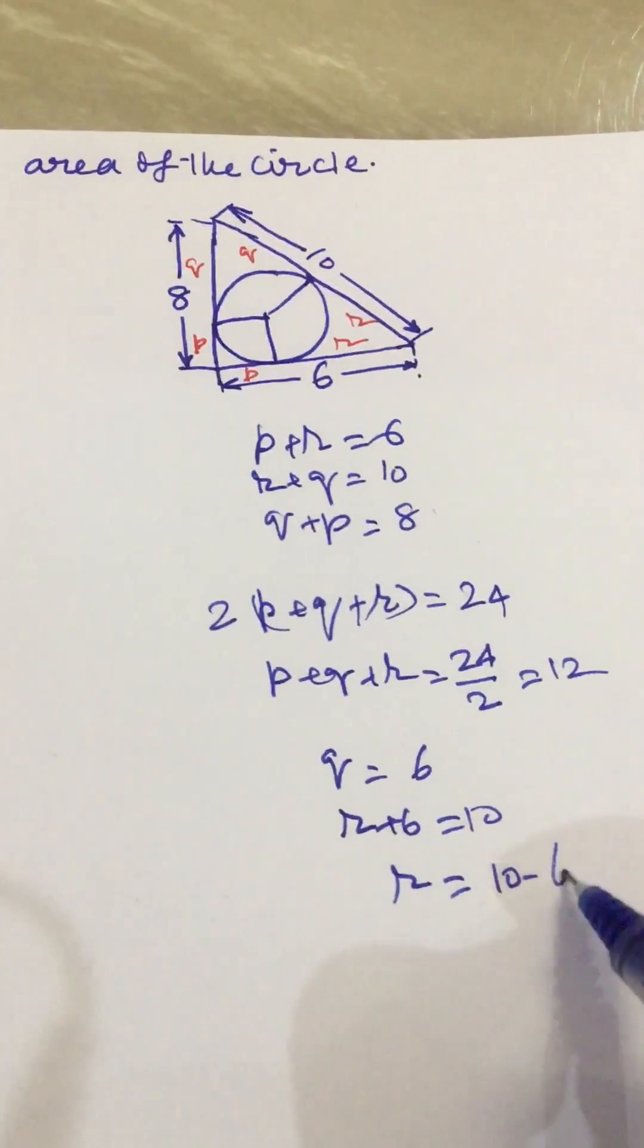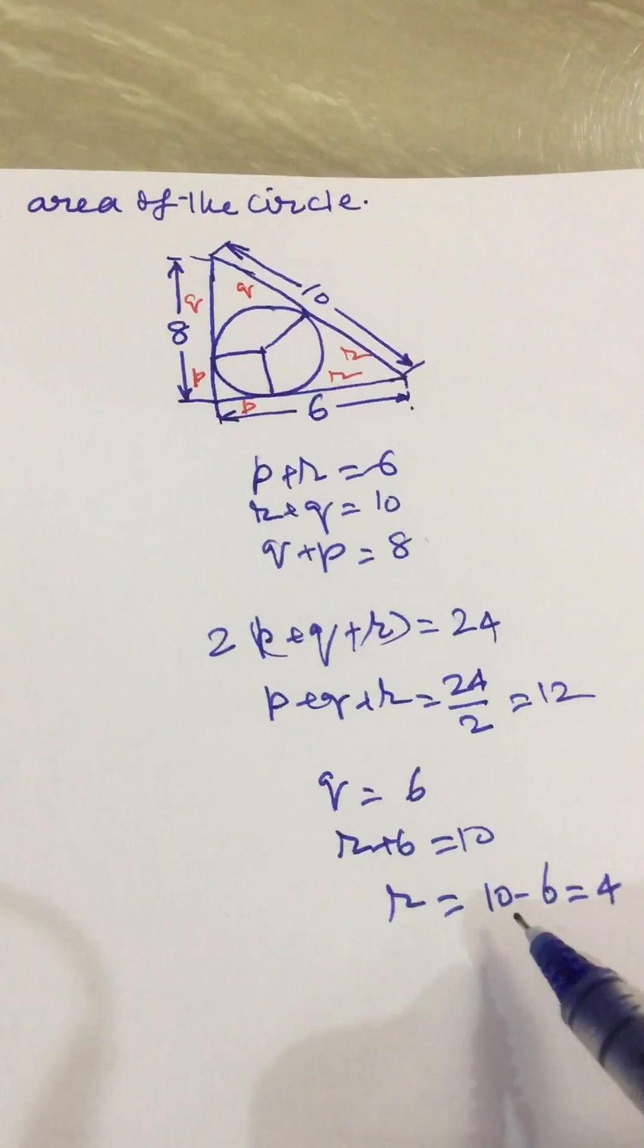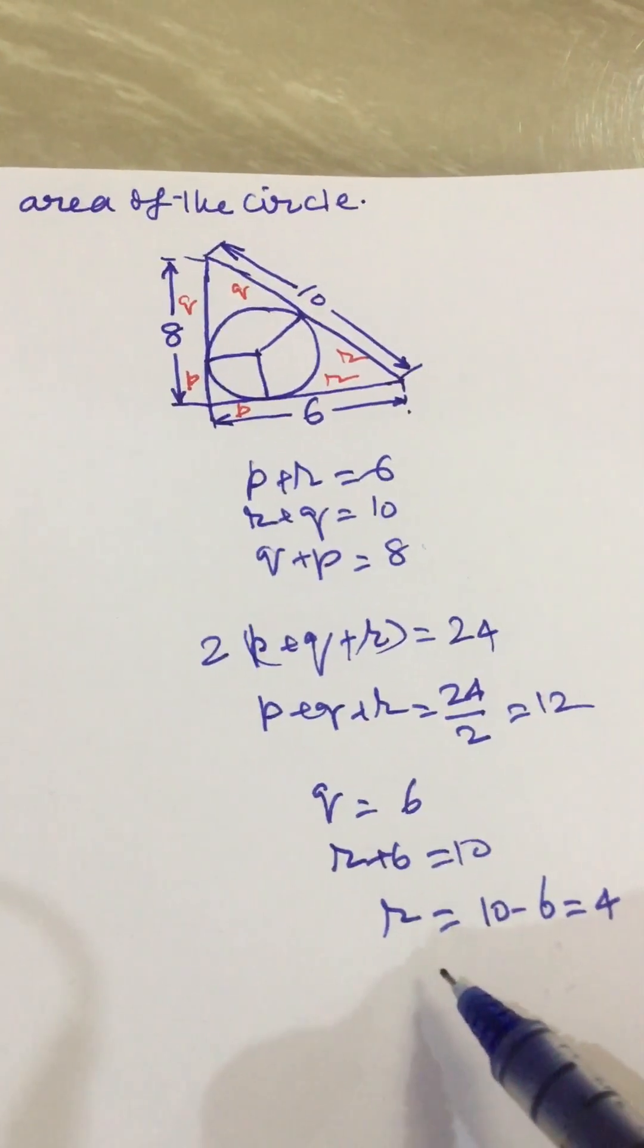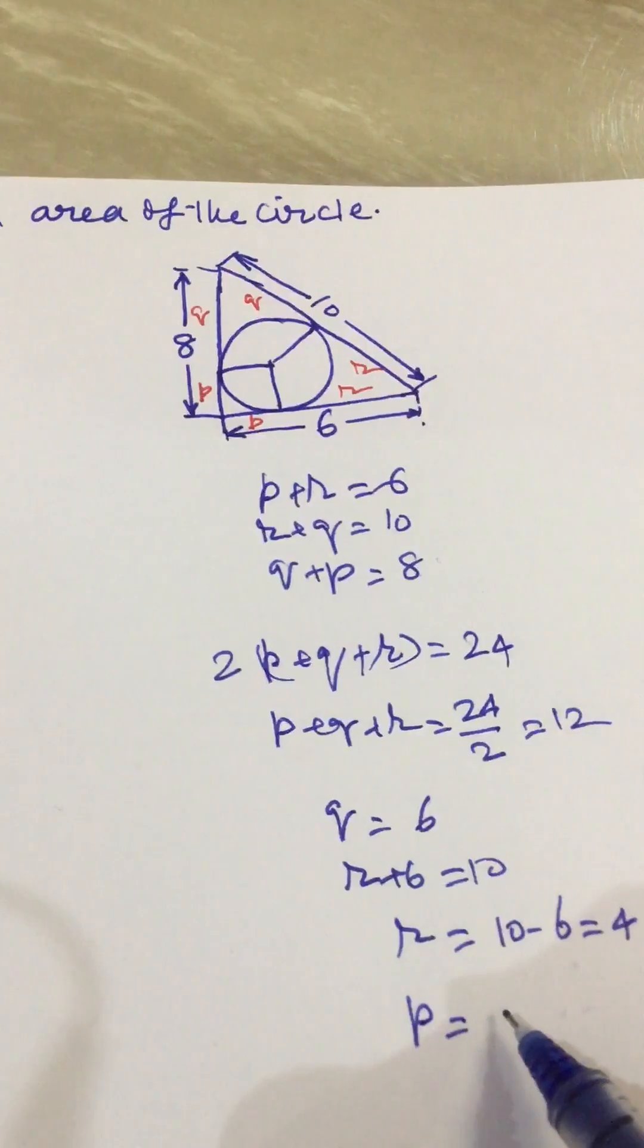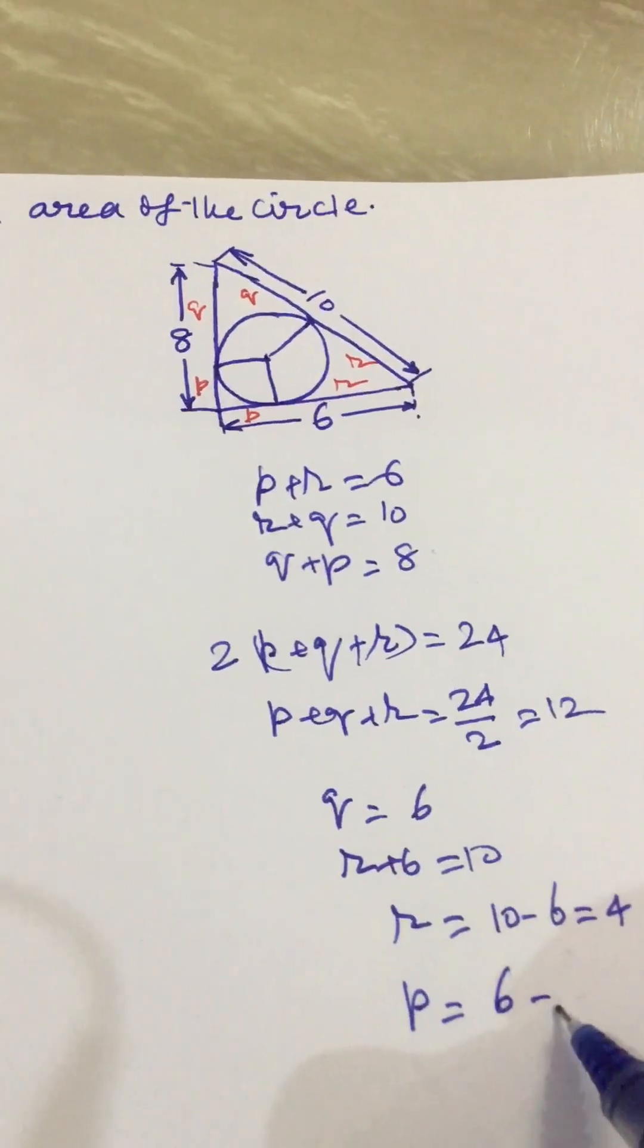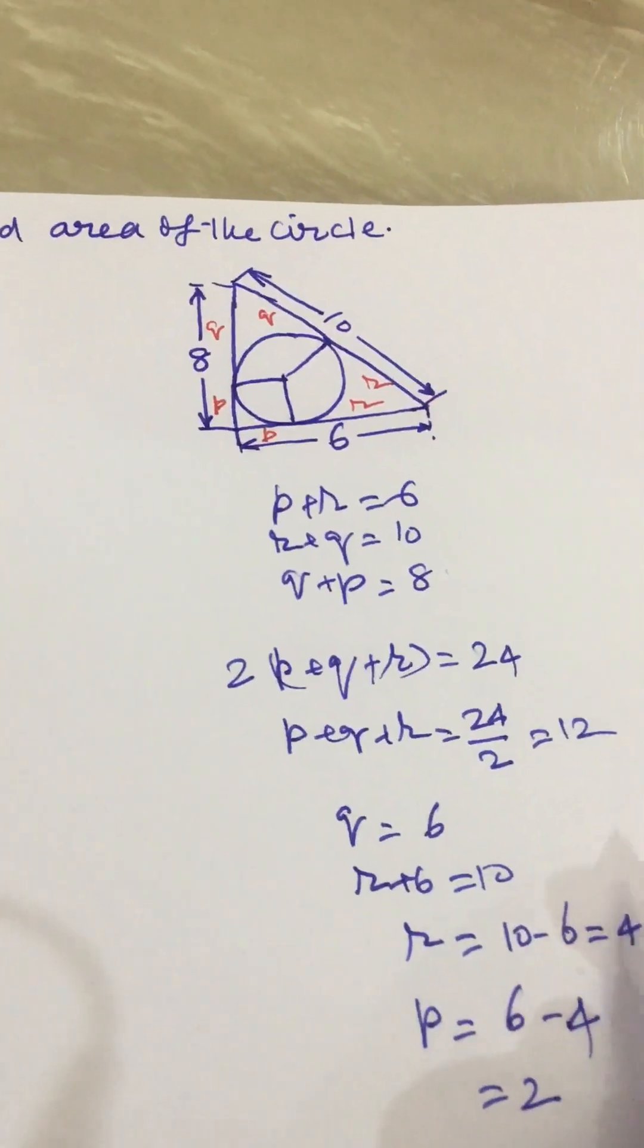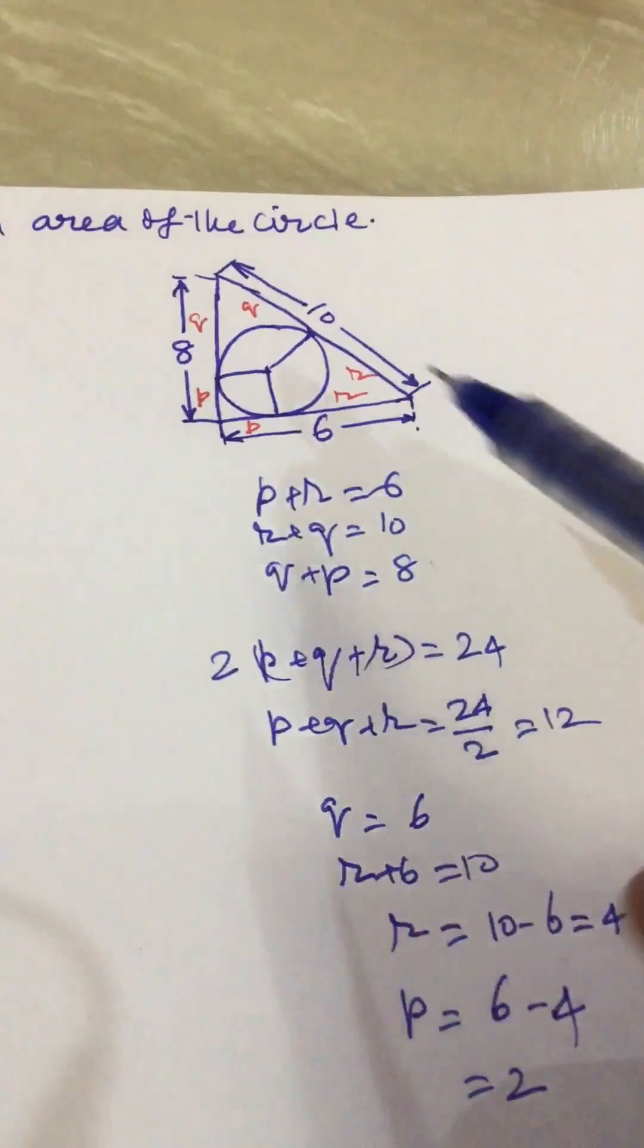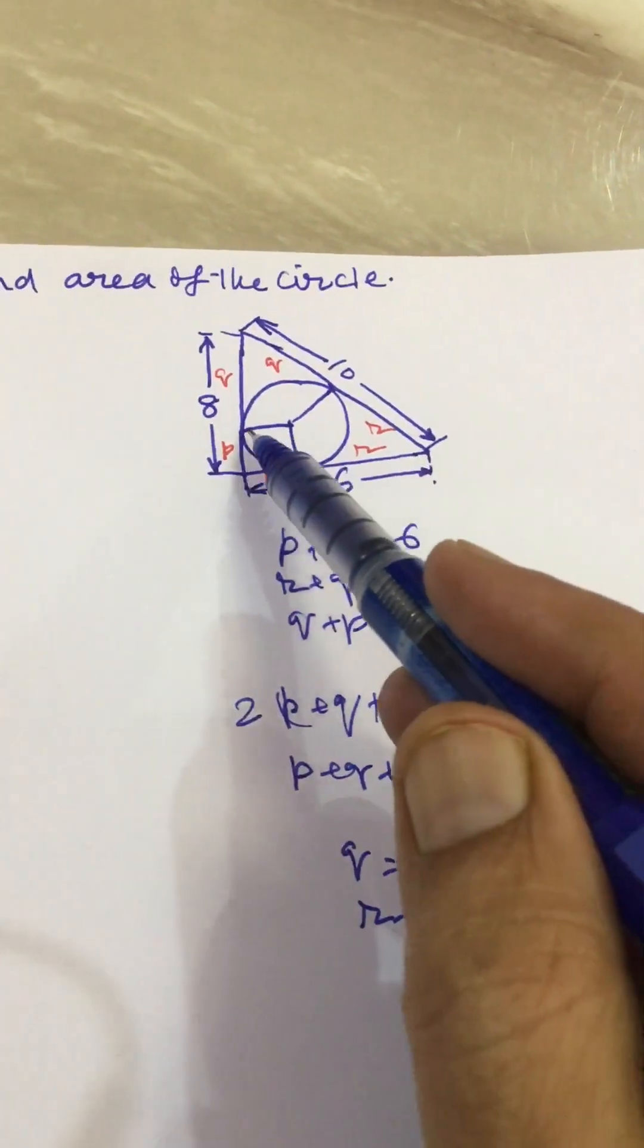We will get 10 minus 6 equal to 4, so R equals 4. P will be equal to 6 minus R, that is 4, so P equals 2. Now we have found out all these distances.